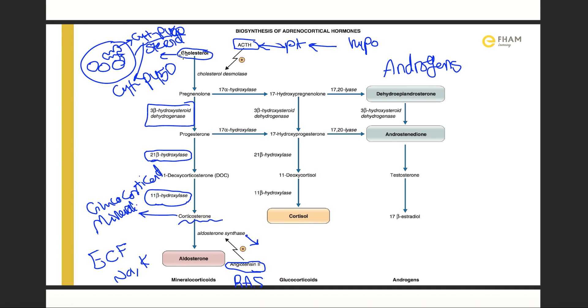Now we are done from the aldosterone pathway. Moving to the second pathway for the glucocorticoids. Now starting from cholesterol, as we said here all these steps by cholesterol desmolase, it is converted to pregnenolone.